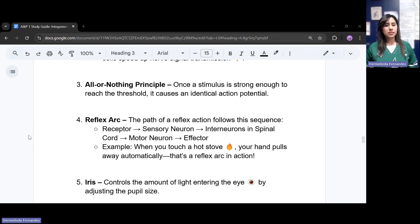The reflex arc is the path of the reflex action that follows this sequence: receptor, sensory neuron, interneurons of the spinal cord, motor neuron, and then the effector. So receptor, you're receiving something, then you're sensing it, then you're getting that internal, and you're trying to change that, see what information it's giving you, then your motor neurons are reacting, and then you have an effect to it. For instance, you touch a hot stove, your hand pulls away automatically, that would be a reflex arc in action.